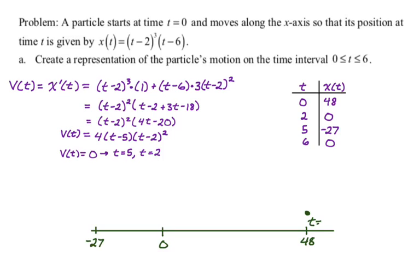And so let's plot some points. So at t equals 0, we're here at 48. At t equals 2, I'm here at zero. The next one, I'm going to move up a little bit so that I can turn when I draw the motion. So that's at t equals 5 at negative 27. And then back here at t equals 6 at zero.